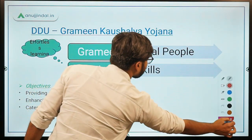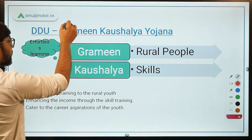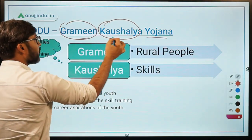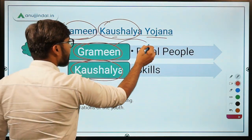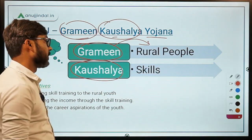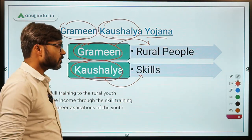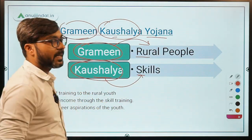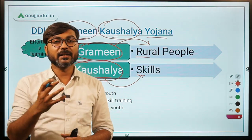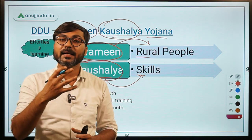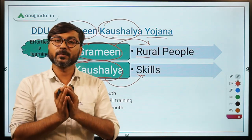The name of the scheme is Grameen Kaushalya Yojana. There are two important words: one is 'grameen' and another is 'kaushalya'. Grameen means rural people — this scheme is for rural people. Kaushalya means skills; it is a Sanskrit word. So from these two words we understand that under this scheme the government will provide skill training to the rural poor people, and with the help of these skills they can enhance their income and get employment.